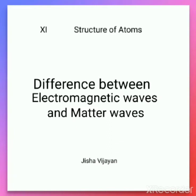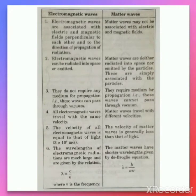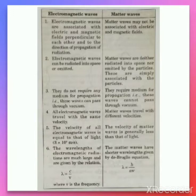Let us discuss the differences between electromagnetic waves and matter waves. First difference: electromagnetic waves are associated with electric and magnetic fields, which are perpendicular to each other and perpendicular to the direction of propagation. But in the case of matter waves, as explained by de Broglie, they are not associated with electric and magnetic fields. They do have a wave nature, but no electric and magnetic field.